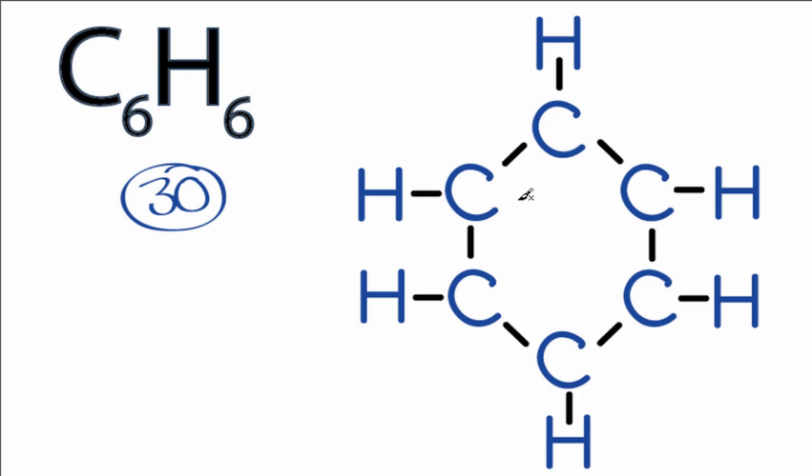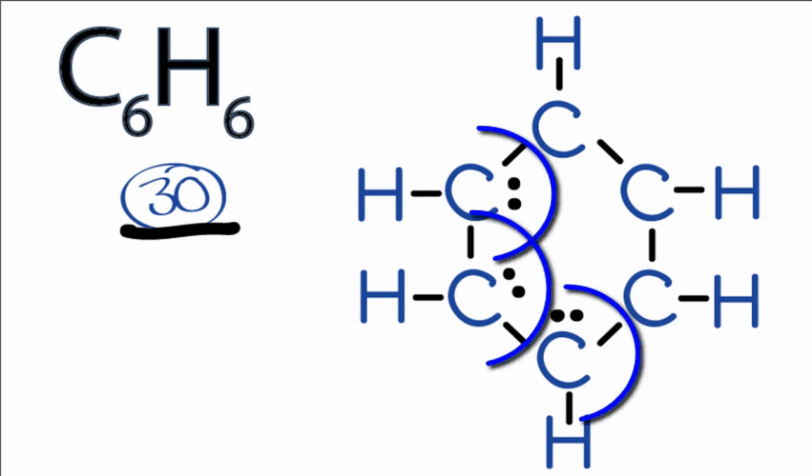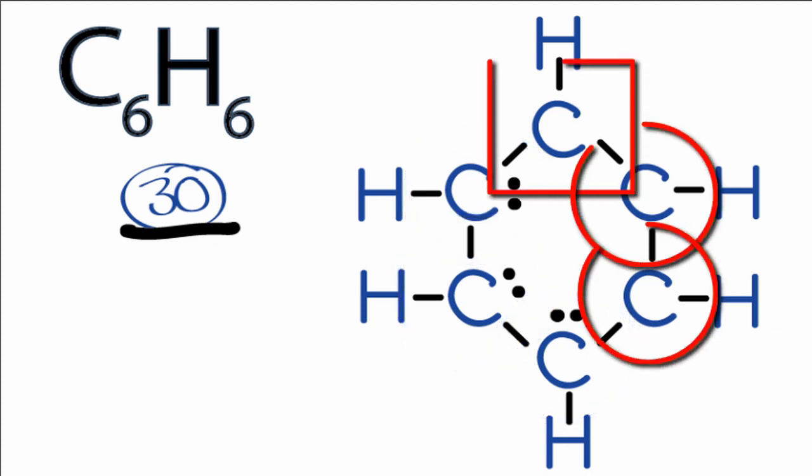So we have six valence electrons, so we'll put two here, two here, and then two here. But you can see right away, we have octets on these carbon atoms, but these other three only have three bonds. So they only have six valence electrons, and they don't have a full outer shell.